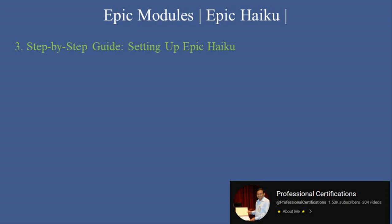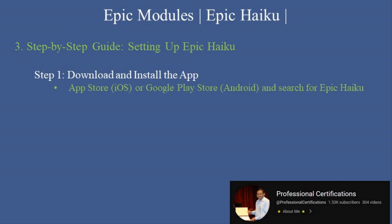Setting up Epic Haiku. Step 1, Download and install the app: go to the App Store for iOS or Google Play Store for Android and search for Epic Haiku, then download and install the app on your smartphone. Step 2, Configure the app: obtain setup instructions and server configuration details from your organization's IT department, then enter the server address and other required settings to connect to your organization's Epic system. Step 3, Login: use your Epic credentials to log in to the Haiku app securely. If multi-factor authentication, MFA, is enabled, follow the prompts to complete the setup.